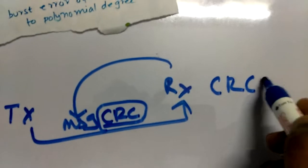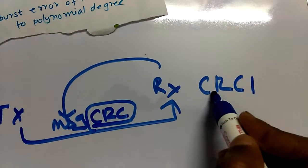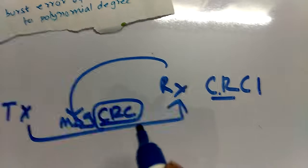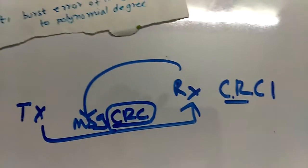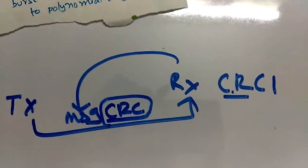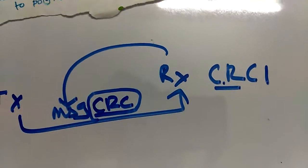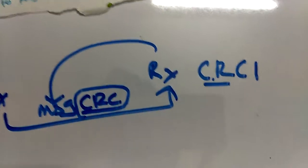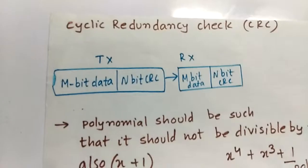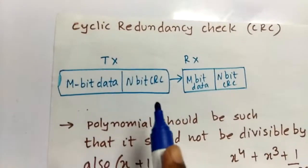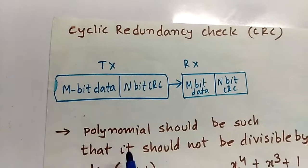Let's call it CRC1. The receiver will compare CRC1 with the received CRC value. If both are equal, the data is perfectly fine. If they differ, it knows an error has occurred. As you can see, we are adding an n-bit CRC extra to the m-bit data.